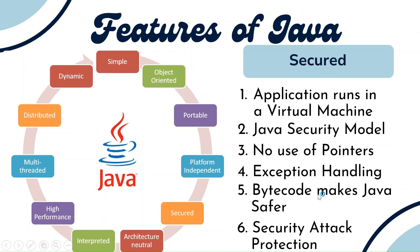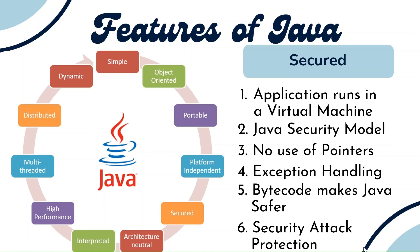One more feature supporting security is exception handling. We need to catch exceptions and provide appropriate messages so the client understands what type of exception it is and can rectify it. We have an exception handling mechanism to handle exceptions and give proper error messages to the end user. The bytecode also makes Java safer because the JVM interprets the bytecode, and any malicious code that still exists can be removed by the JVM. There is also security attack protection through a security manager, which provides security protection mechanisms to reduce certain types of attacks.